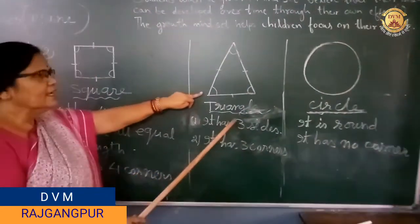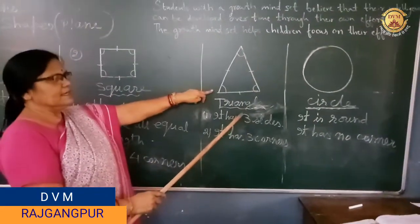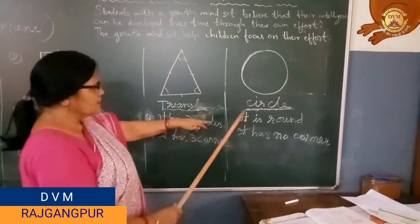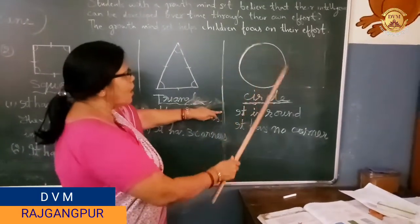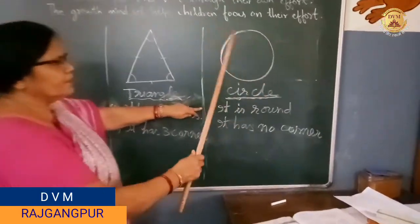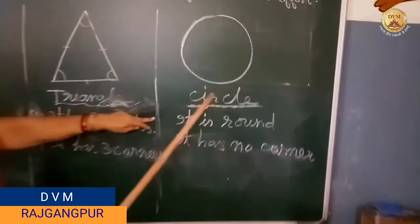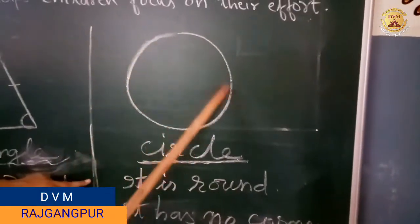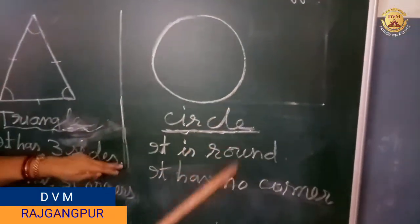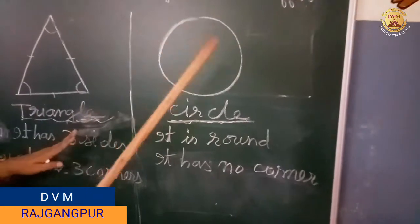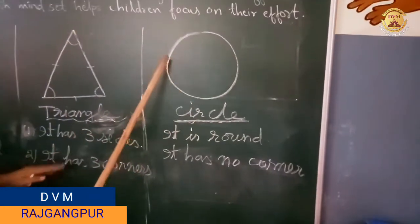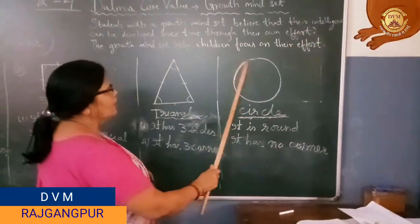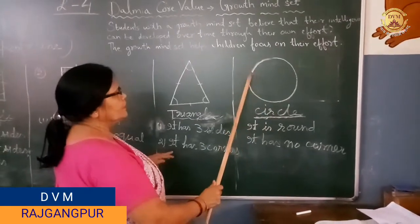The next shape is circle. It is round in shape and it has no corners. It is only round in shape.